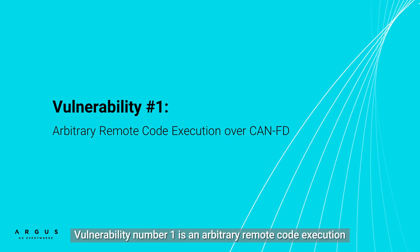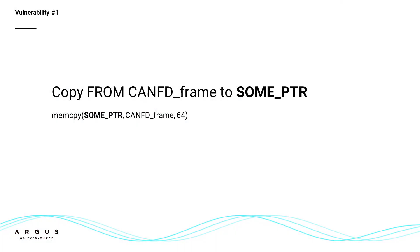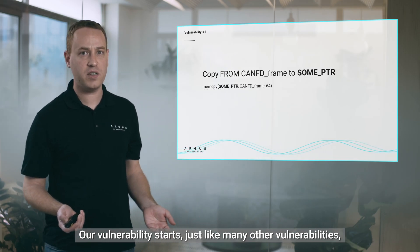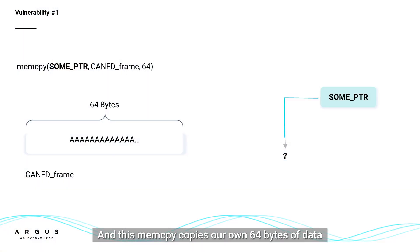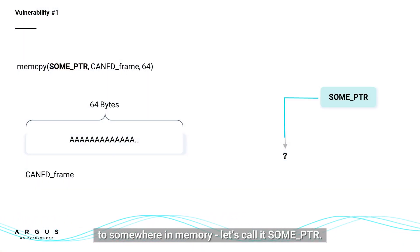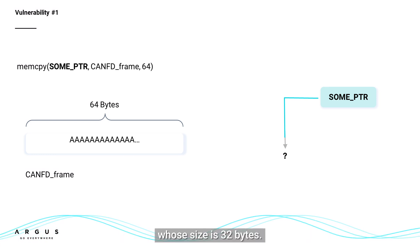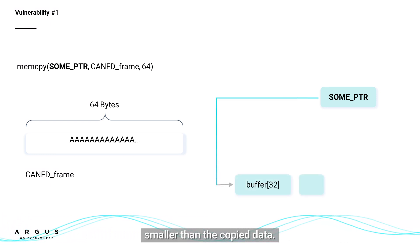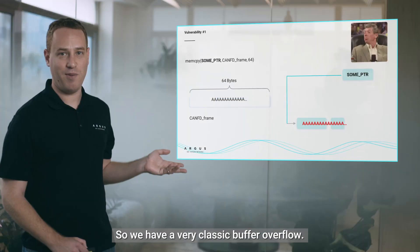Vulnerability number one is an arbitrary remote code execution via KNFD network access. Our vulnerability starts, just like many other vulnerabilities, with a mem copy. This mem copy copies our own 64 bytes of data to somewhere in memory — let's call it sumptr. It turns out that sumptr points to a buffer whose size is 32 bytes, smaller than the copied data. So we have a very classic buffer overflow.